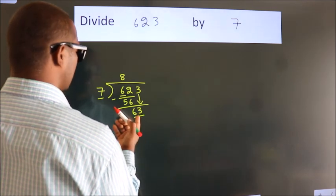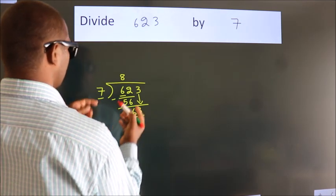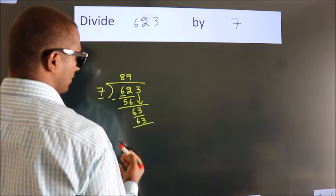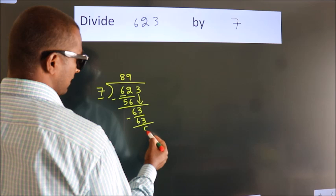When do we get 63 in 7 table? 7 times 9, 63. Now we subtract. We get 0.